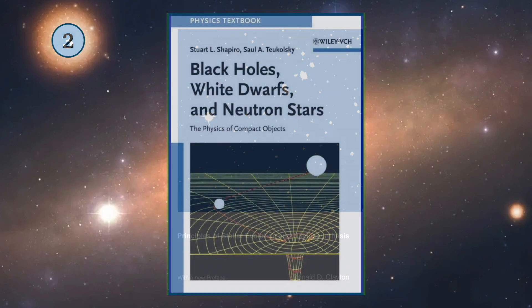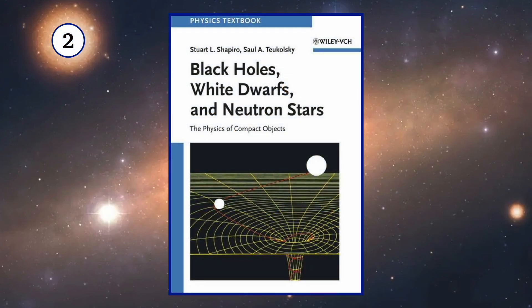Moving on to number two, we have Black Holes, White Dwarfs, and Neutron Stars: The Physics of Compact Objects by Shapiro and Tukulski. This book is primarily focused on late stages in the stellar life cycle.